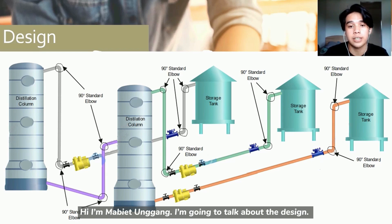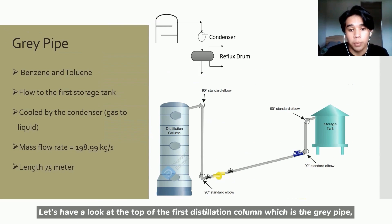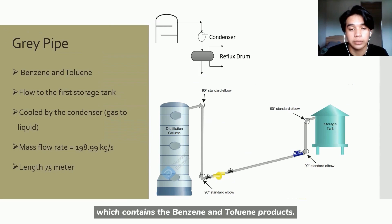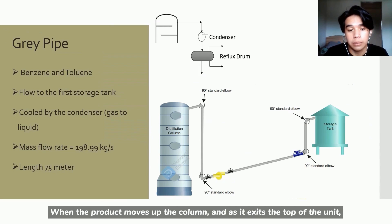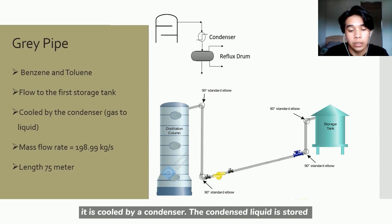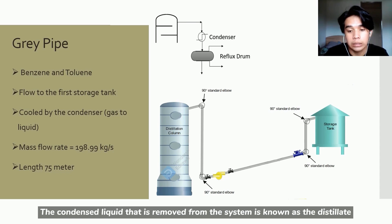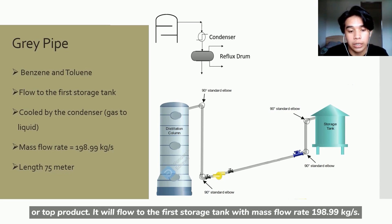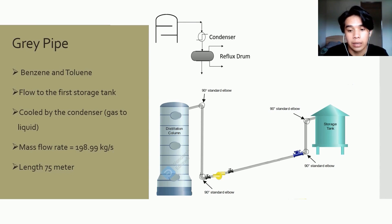Hi, I'm Ahmed Unggang. I'm going to talk about the design. Let's have a look at the top of the first distillation column, which is the gray pipe, which contains the benzene and toluene product. When the product moves up the column, and as it exits, the top of the unit is cooled by a condenser. The condensed liquid is stored in the holding vessel known as the reflux drum. The condensed liquid that is removed from the system is known as the distillate or top product. It will flow to the first storage tank with mass flow rate 198.99 kg per second. The length of the gray pipe was 75 meters.